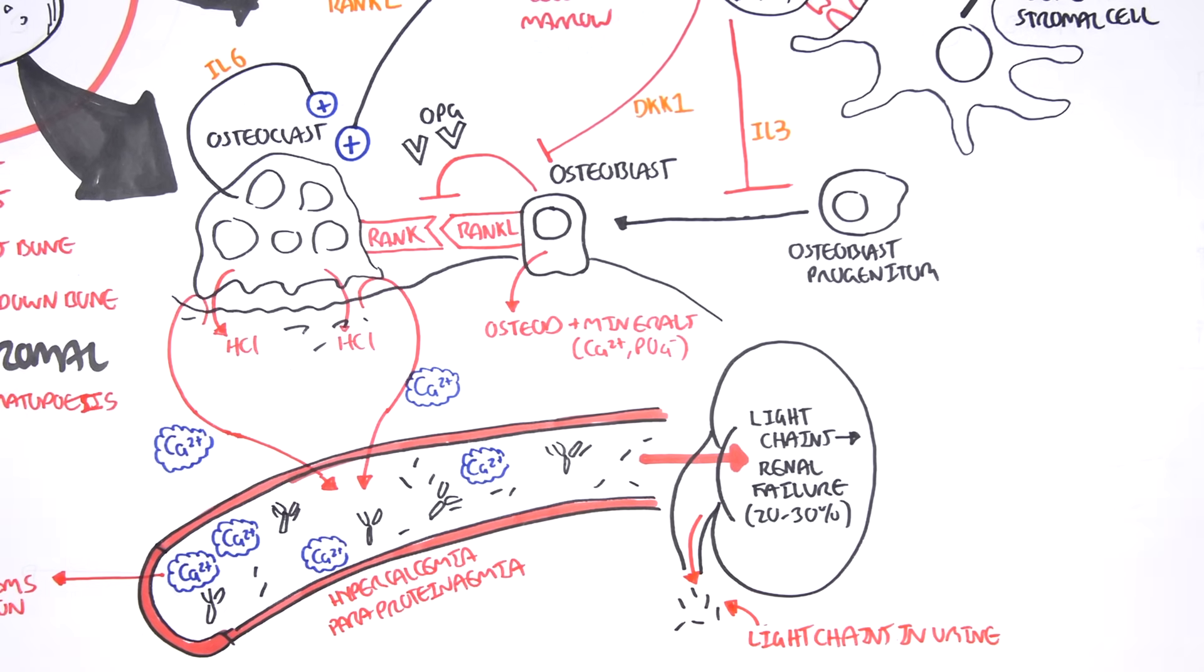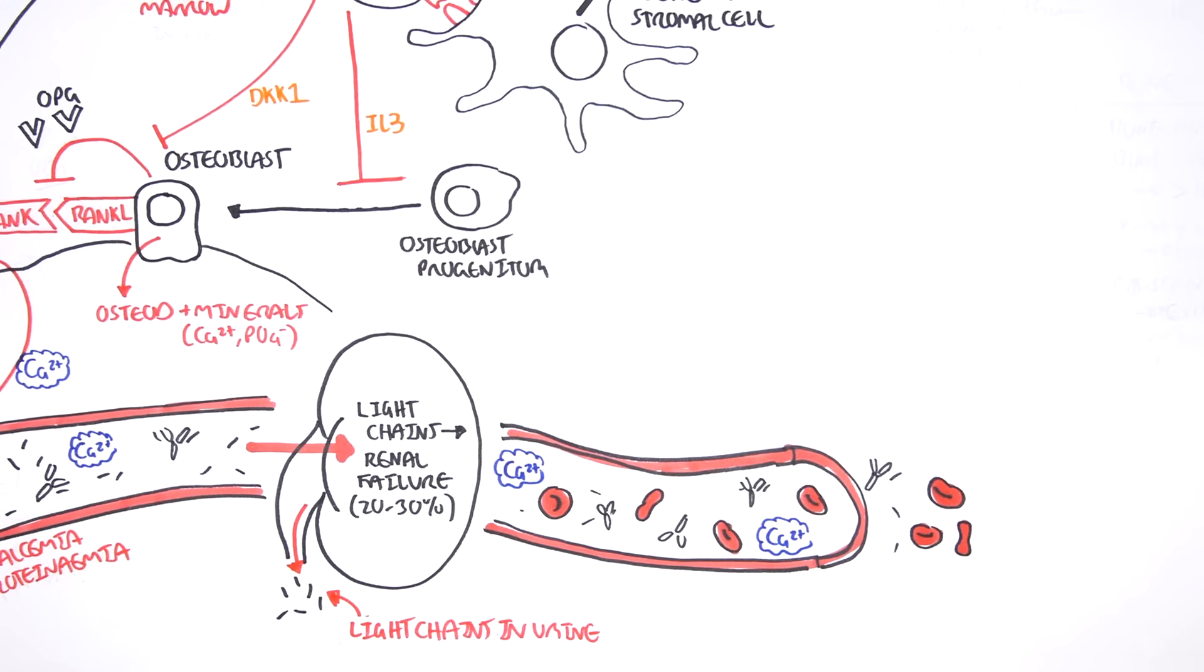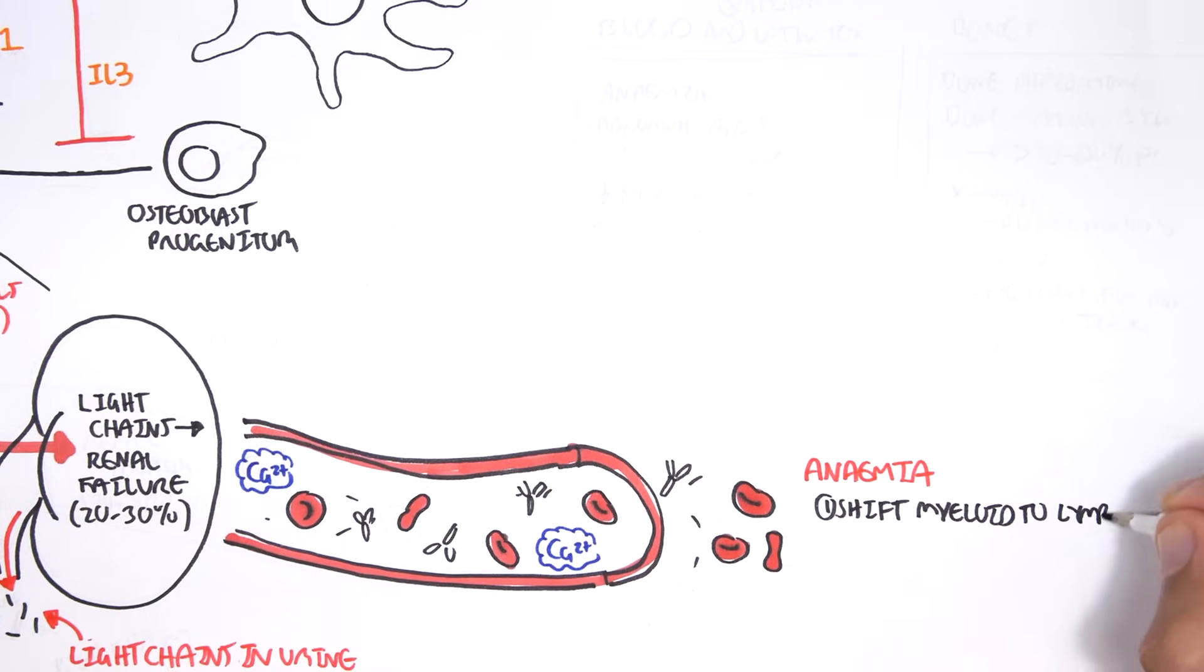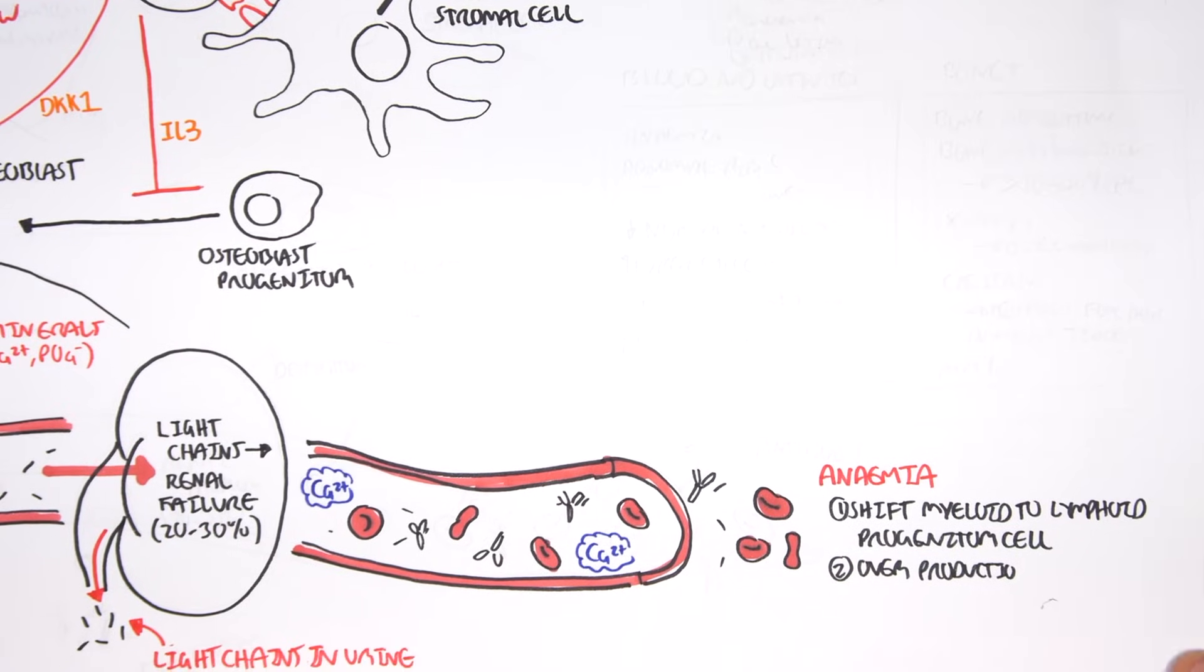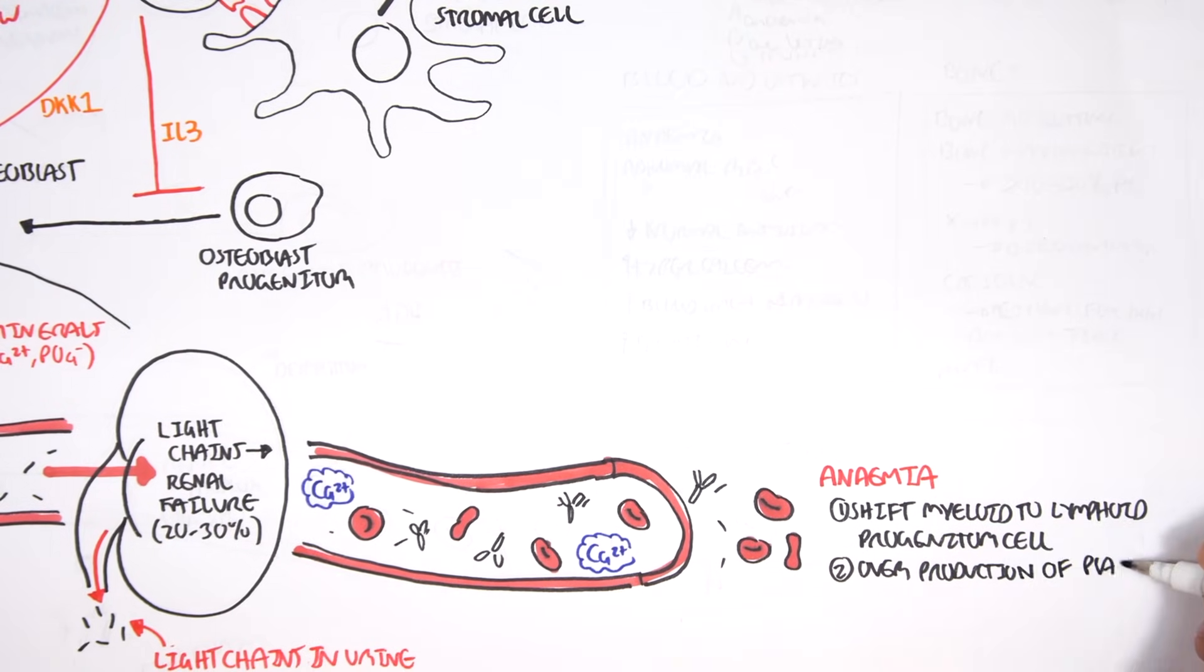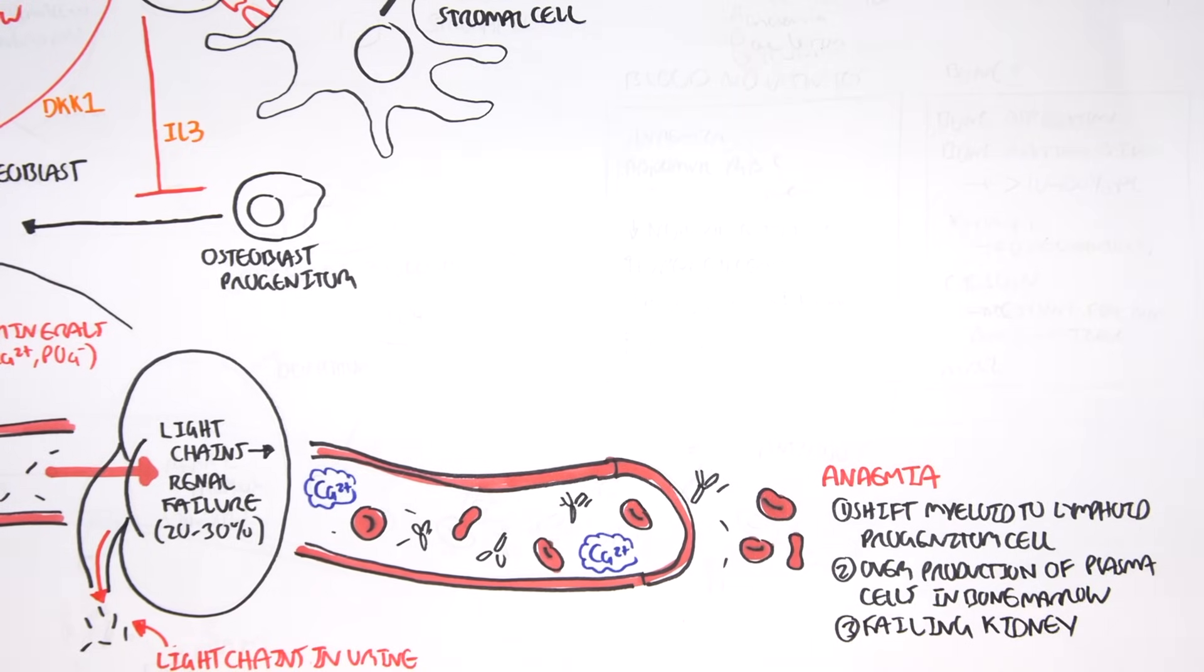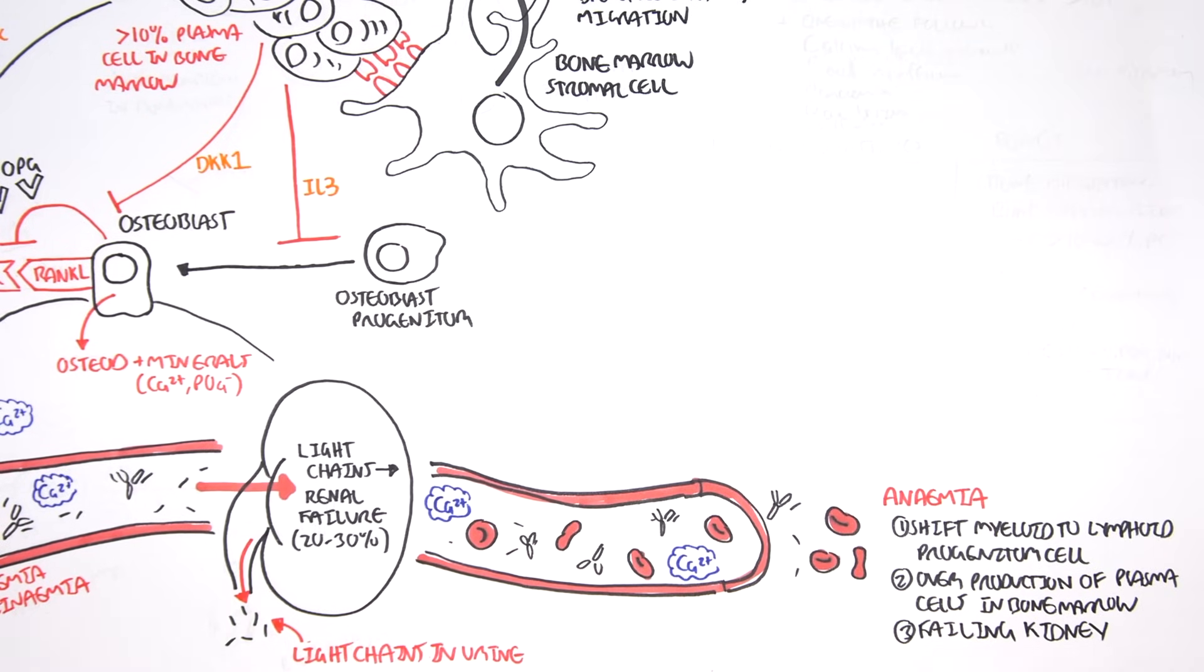Multiple myeloma, as I mentioned at the start, also leads to anemia. And this is through several mechanisms. The first is that there is a shift of hematopoietic stem cells from myeloid progenitor to lymphoid progenitor to make more plasma cells. Two, overproduction of plasma cells clog up the bone marrow, stopping red blood cells being formed and entering the plasma. Three, there is also the kidney failure, failing kidney, which results in decreased erythropoietin production and so decreased red blood cell production.